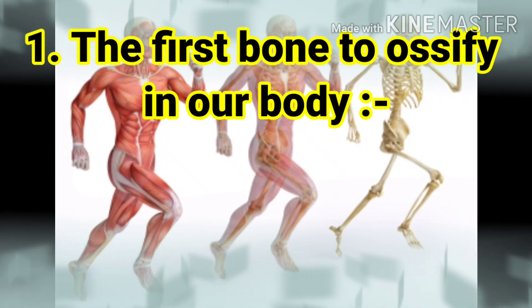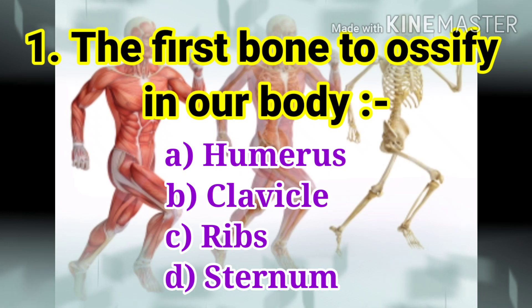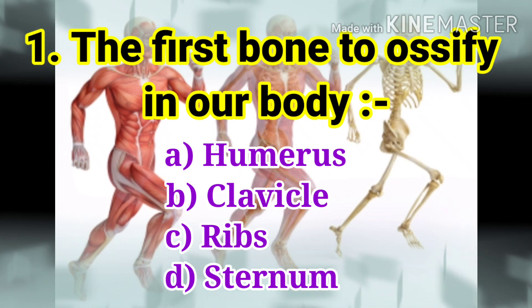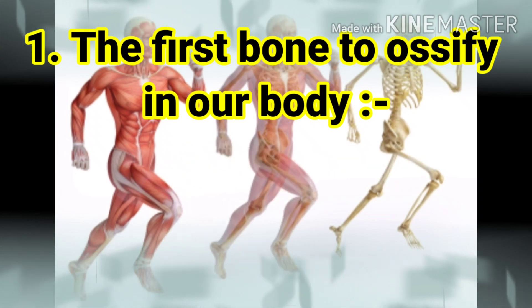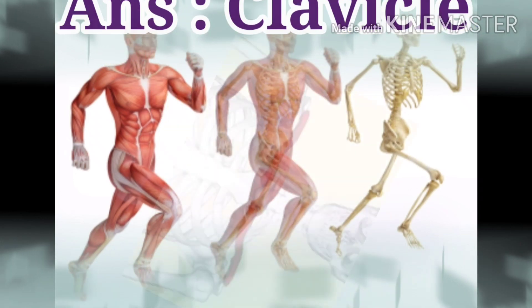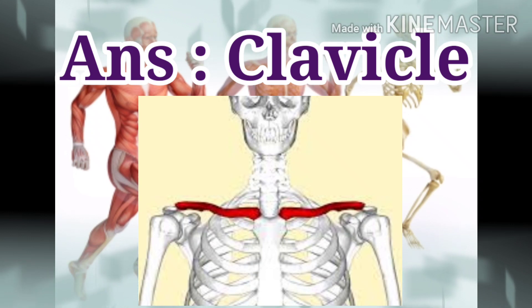The first question is: the first bone to ossify in our body. The options are humerus, clavicle, ribs, and sternum. The answer is clavicle. The first bone to ossify in the developing embryo, and the last to complete epiphyseal union, is the clavicle.